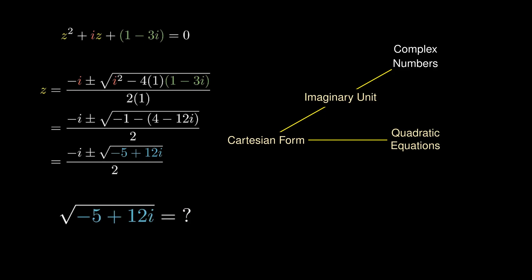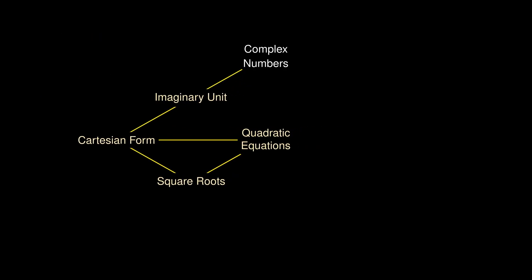While it may seem a little daunting at first, we can actually find the square root of complex numbers. The square root of -5 + 12i will equal a + bi, where a and b are numbers we want to find. Squaring both sides, (a + bi)² must equal -5 + 12i.